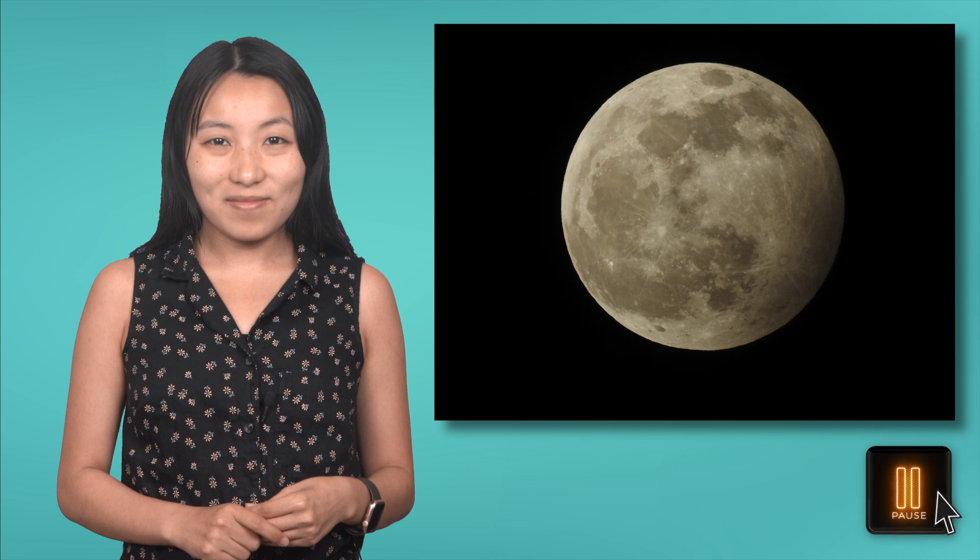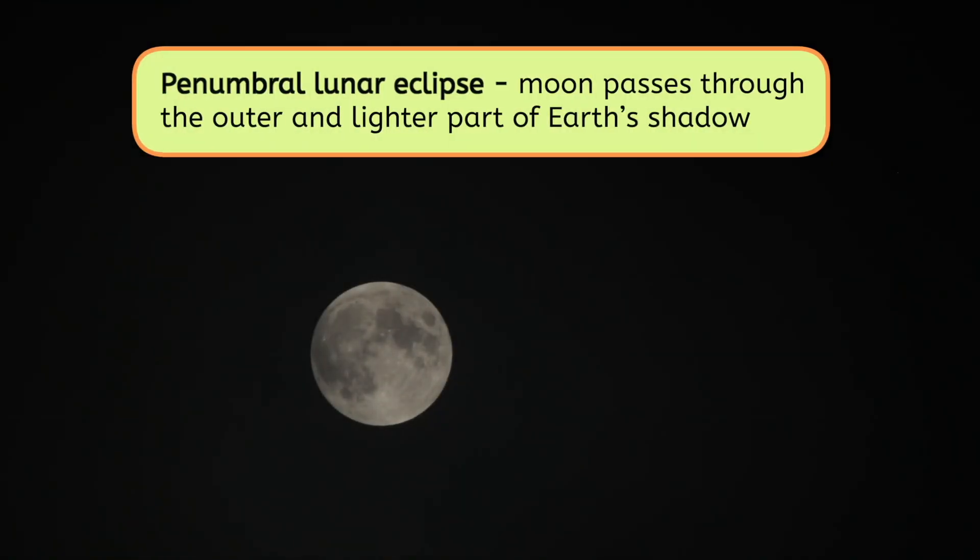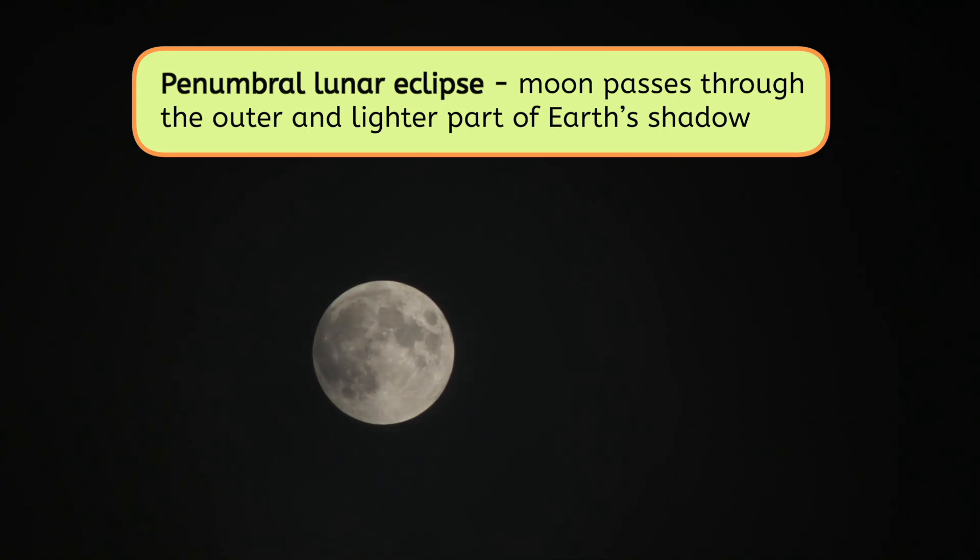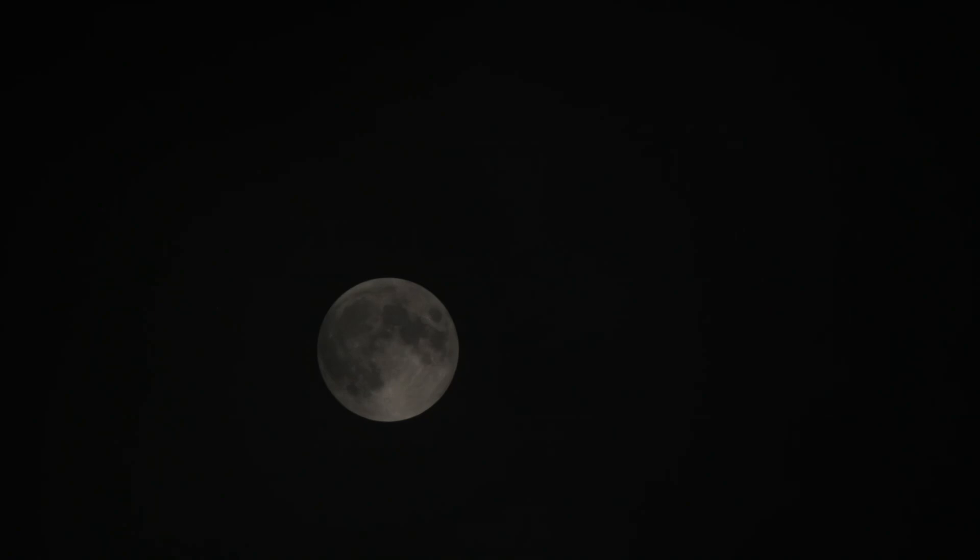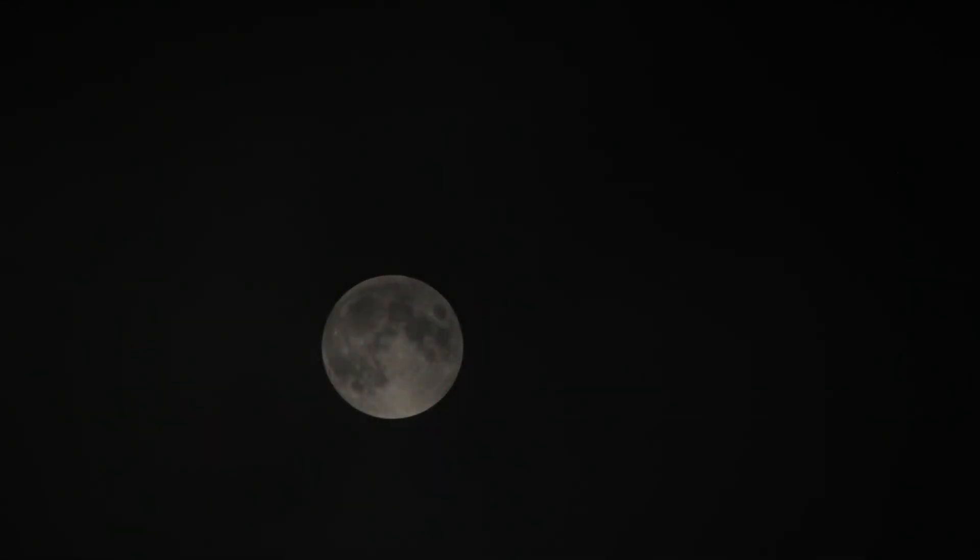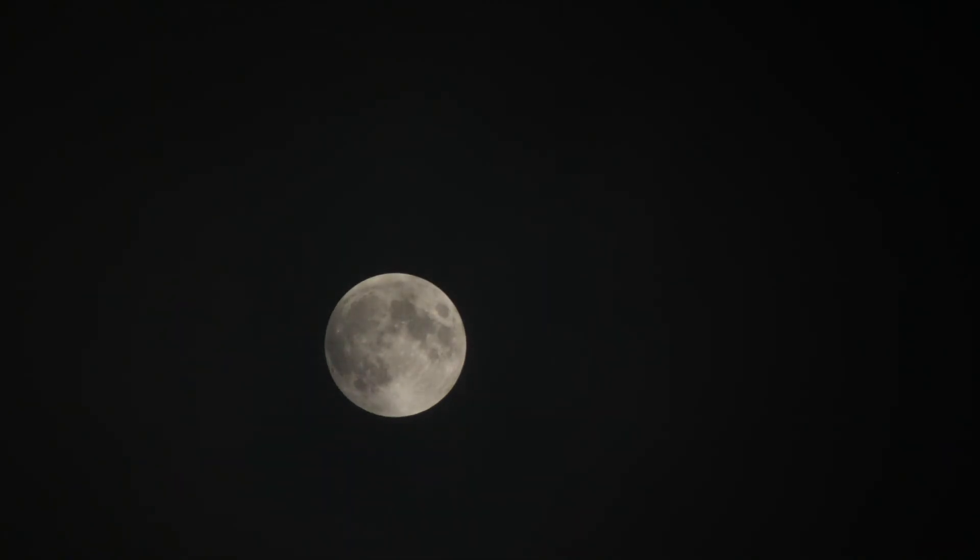And finally, there is the Penumbral Lunar Eclipse. And it's also the hardest one to notice. But why do you think it's harder to notice than the other kinds of lunar eclipses? Pause the video and record your thoughts in your guided notes. During a Penumbral Lunar Eclipse, the Moon passes through the outer and lighter part of Earth's shadow, making the Moon look slightly dimmer. Unlike other types of eclipses, a Penumbral Eclipse doesn't cover the Moon with a dark shadow. Instead, it looks like a faint shading, which is why it's often missed unless you're looking closely.